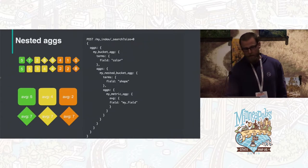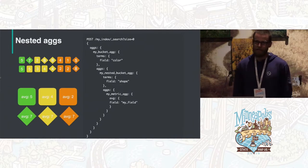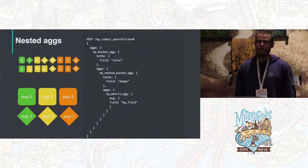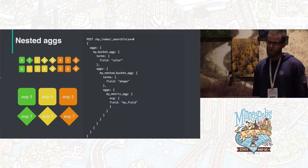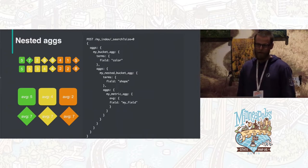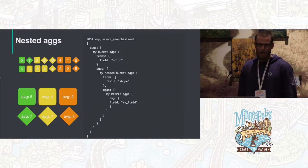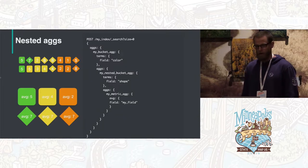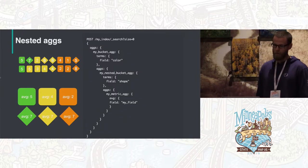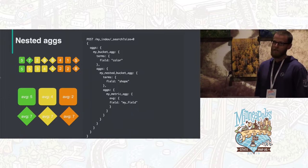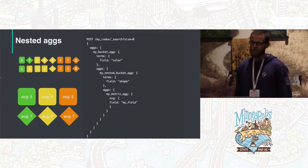Where this gets really powerful is that you can nest aggregations as deep as you want, getting into smaller and smaller groups and calculating metrics for each. For example, a nested aggregation can split data by both color and shape, so you can see the average for all squares versus all diamonds — mapping directly to something like a nested bar chart.